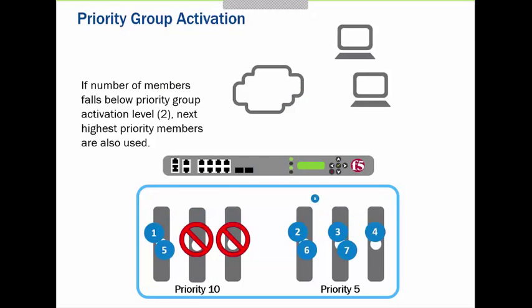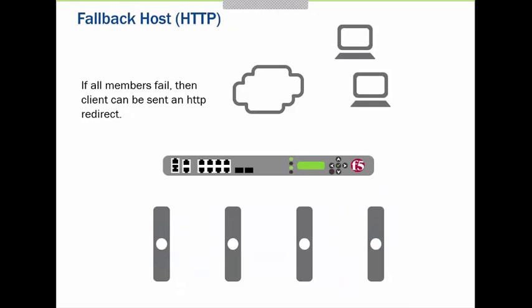So if two servers go down, priority group five is activated and traffic is sent round robin to servers four, five, six and so on. This is essentially a failover mechanism. The last topic of this module is the fallback host, and after that we will look at some labs for round robin and ratio methods, which are the static ones we can practice.